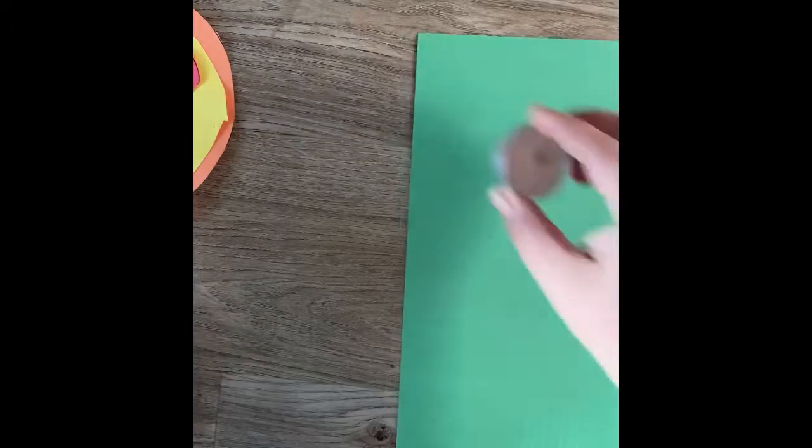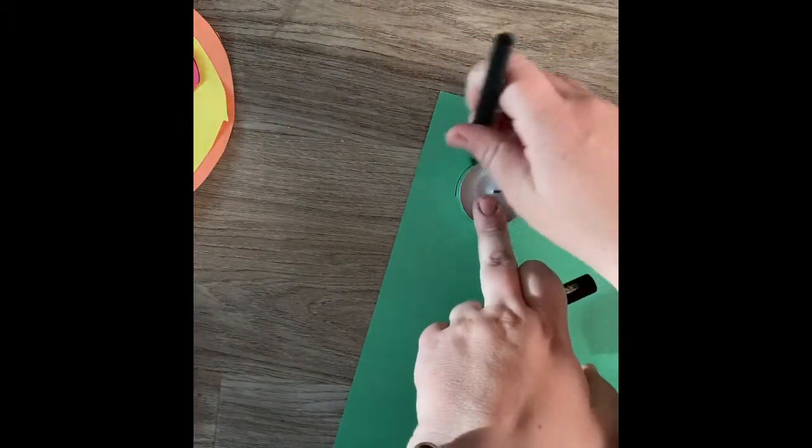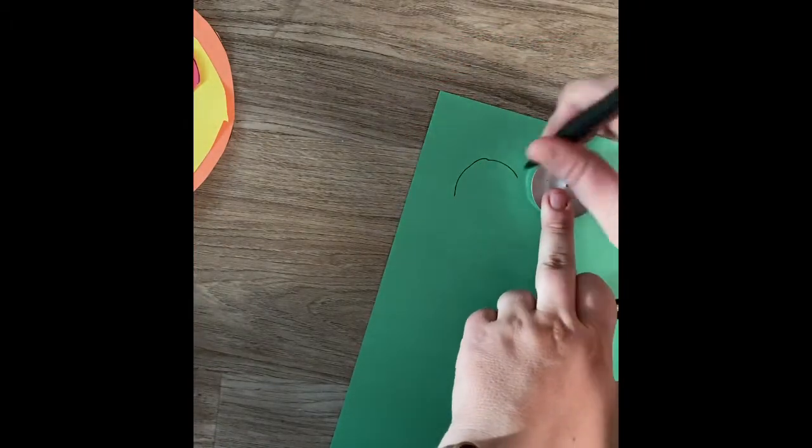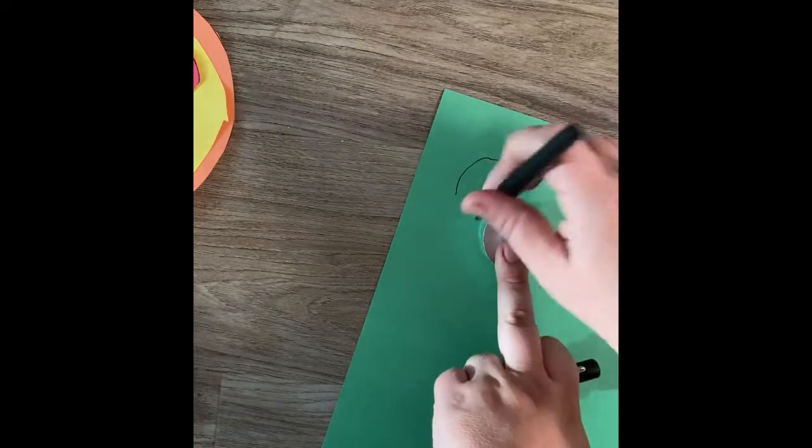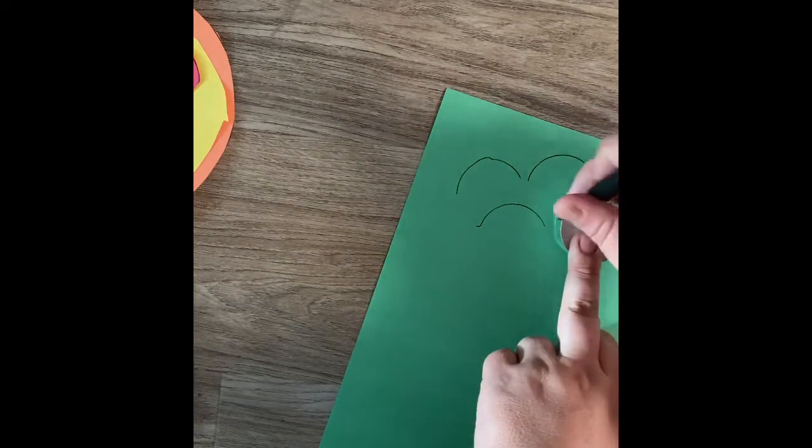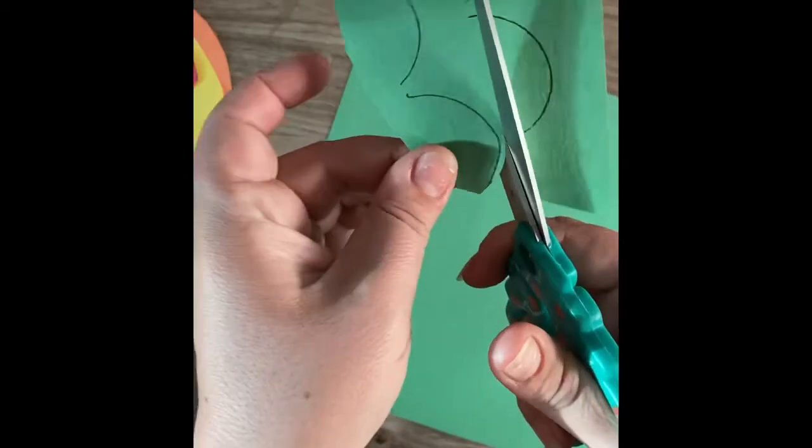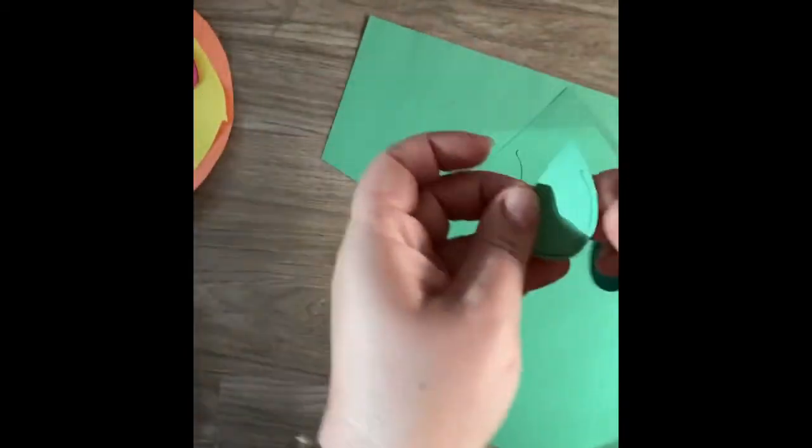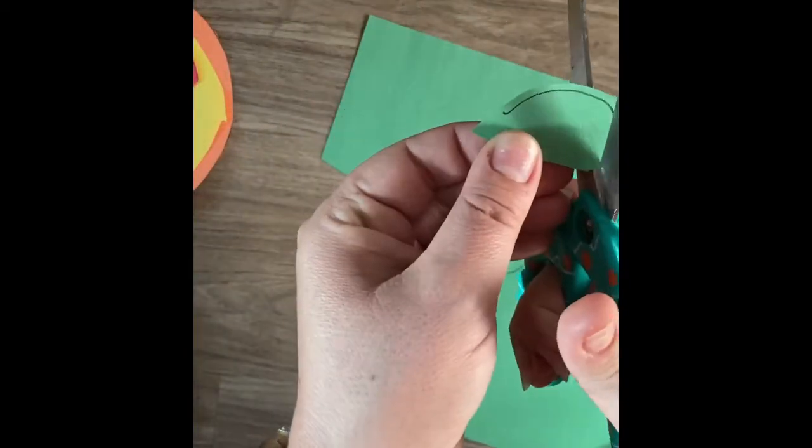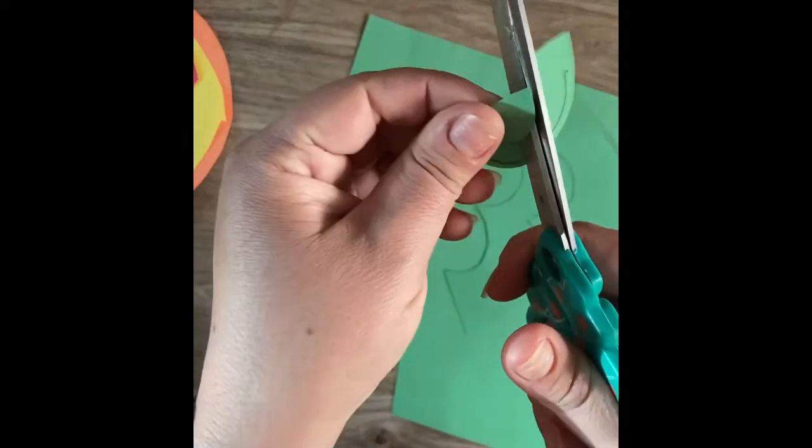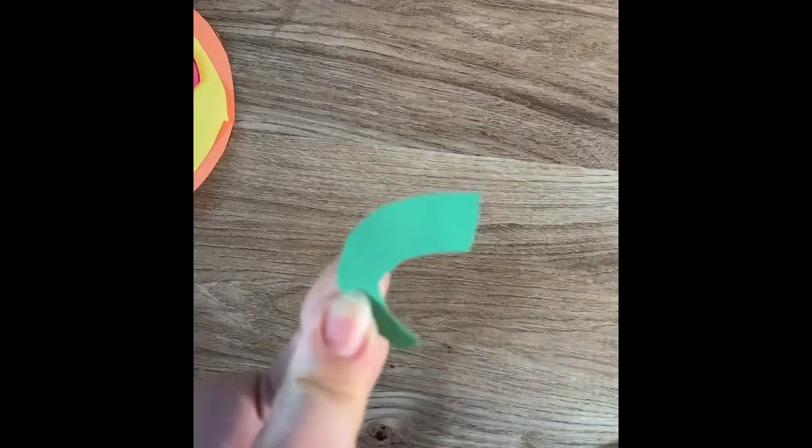Now I'm going to use some green construction paper to make green pepper pieces. For this one I'm only going to trace half of my circle. Then when I cut them out I do almost like a rainbow shape. And there it is. A green pepper.